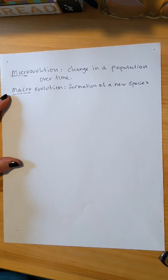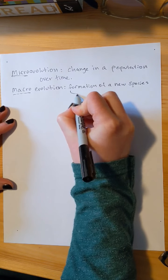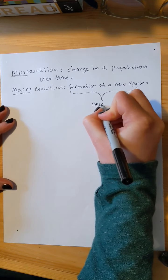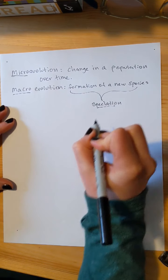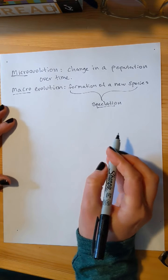Or something bigger like a new taxonomic group. We have a vocab word for this. The formation of a new species is called speciation.